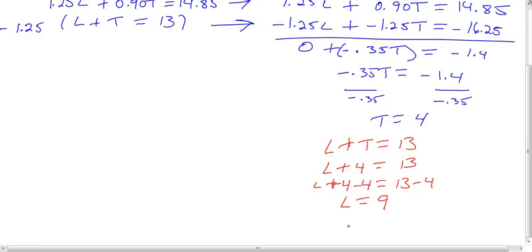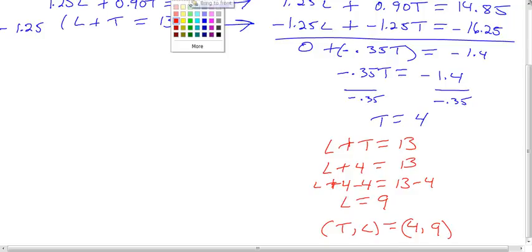Our ordered pair would be (T, L), which equals (4, 9). All right, doing good, moving right along with this.